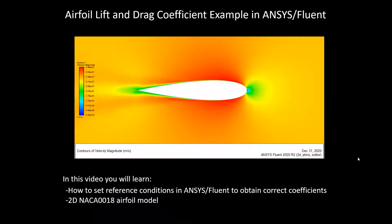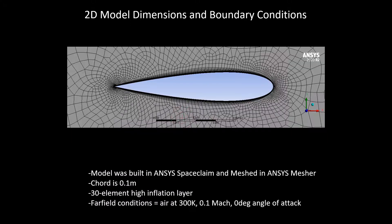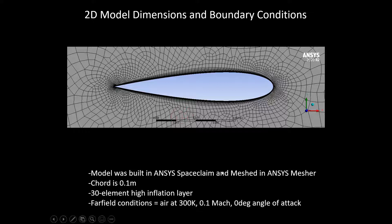Here's a look at the 2D model dimensions and boundary conditions. The model was built in ANSYS SpaceClaim and meshed in ANSYS Mesher. The chord is 100 millimeters, or 0.1 meters, and there was a 30-element high inflation layer.